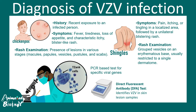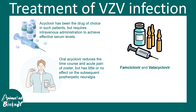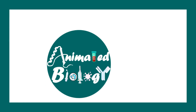Acyclovir is a good treatment choice that can interfere with viral infection; intramuscular administration is preferred as oral acyclovir is less efficient. Two other options — famciclovir and valacyclovir — are also good candidates against this virus.